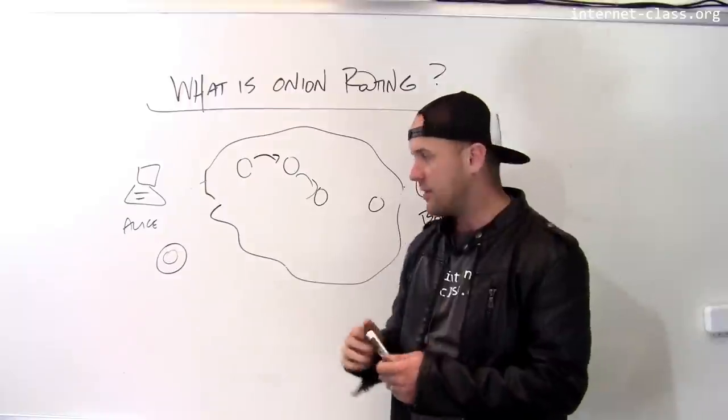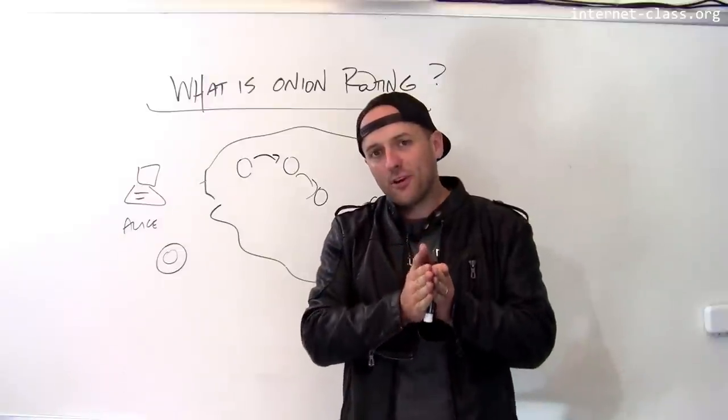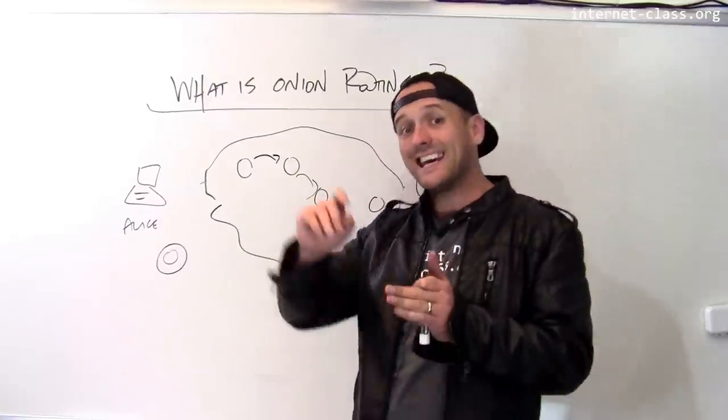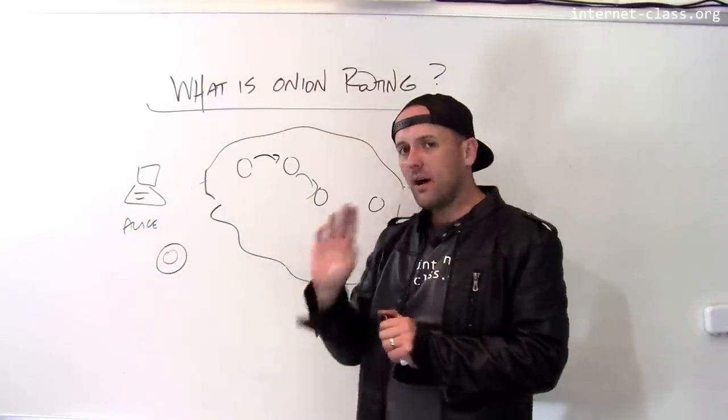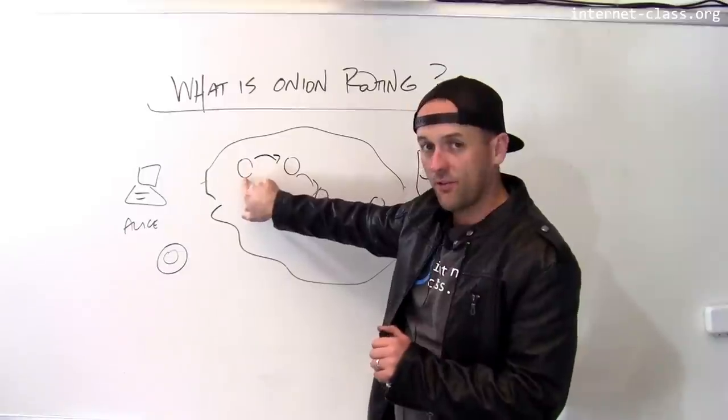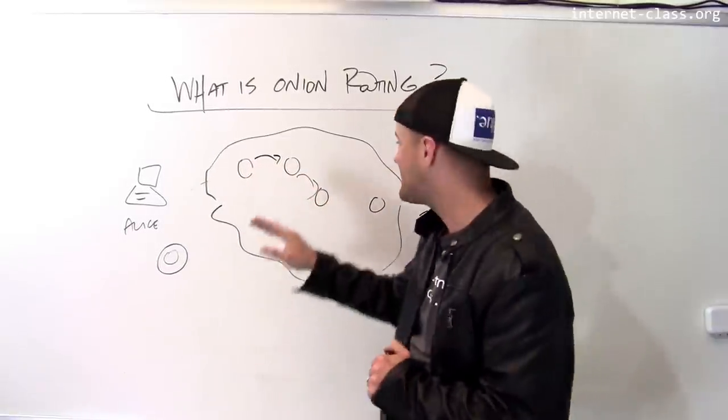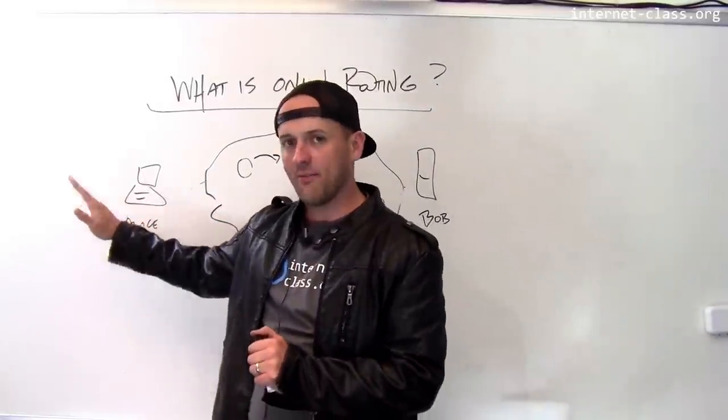The important thing to note is unlike IP routing, where the routers know both where the packet originated—the source address—and its final destination—the destination address—in onion routing, all the router knows is where it got the message from and where it's supposed to send the message next. It doesn't know that the message is going to Bob and it doesn't know that the message came from Alice.